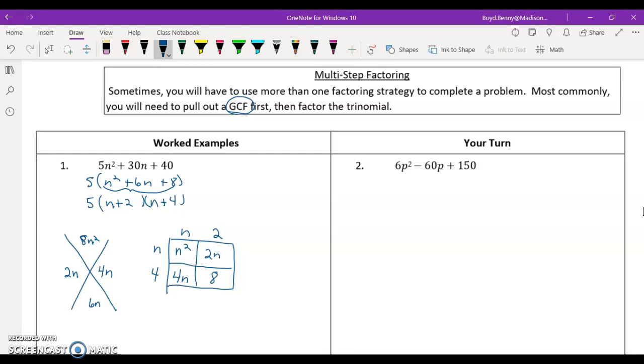Let's move on to example number two. What is the GCF here? Well, it takes a little investigation, but 6 is actually the GCF for this polynomial. If we factor out 6, that would leave us with p squared minus 10p plus 25. The way I think about that is it takes 6 quarters to make a dollar fifty.